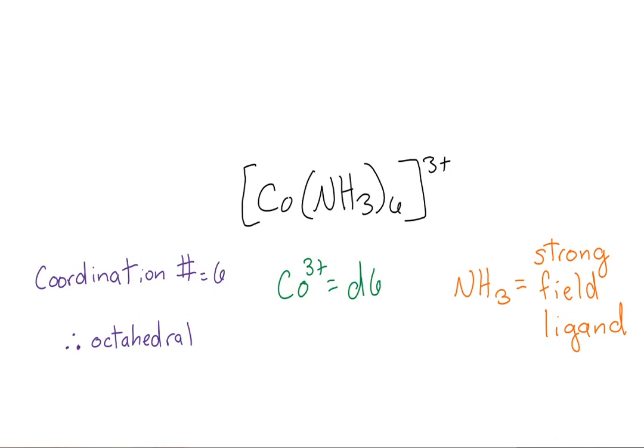Next, we know that ammonia has no charge, therefore our 3 plus is from cobalt. Cobalt three ions are a D6 ion. Finally, ammonia is a strong field ligand. This means that it will cause lone electrons from the central atom to pair when possible.